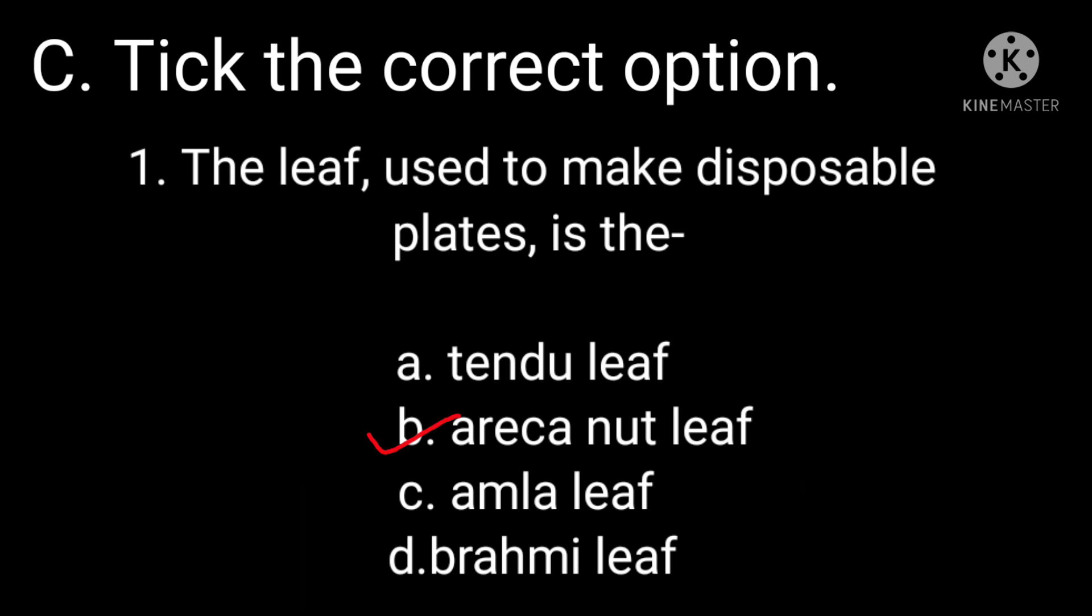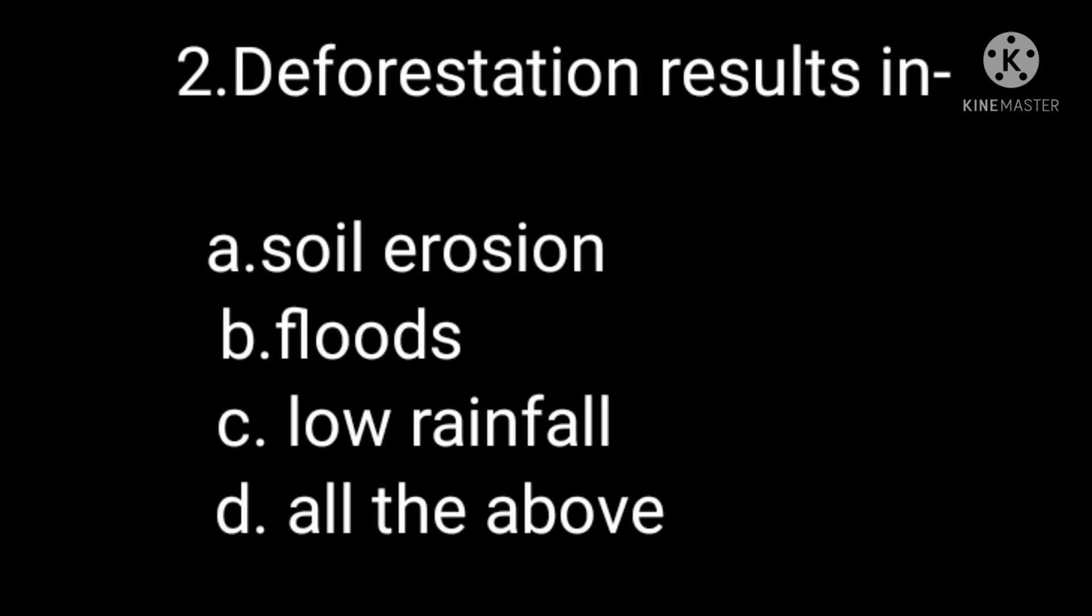Next is deforestation results in, options are soil erosion, floods, low rainfall, and option D is all the above. So option D, all the above is the correct one.